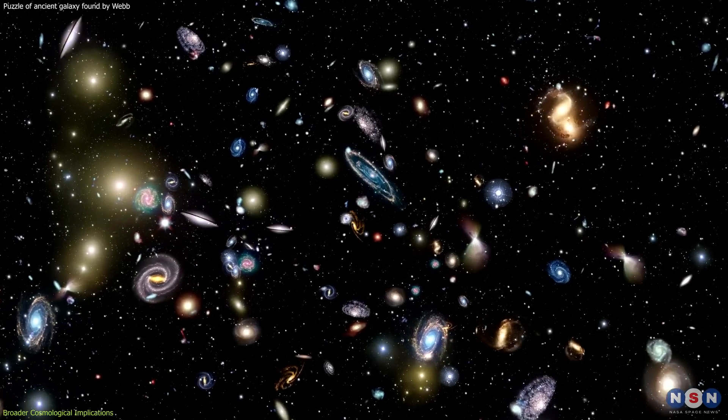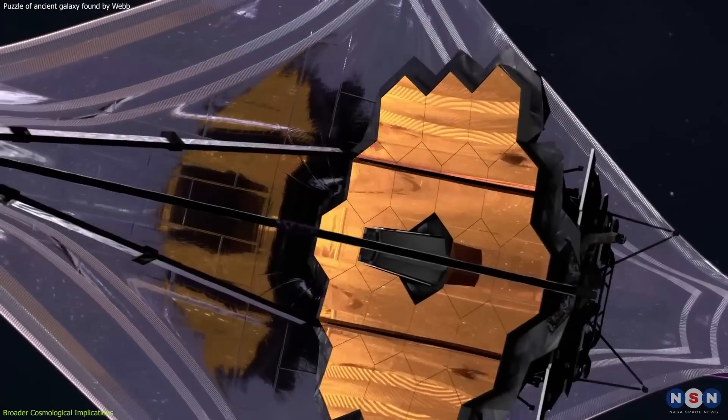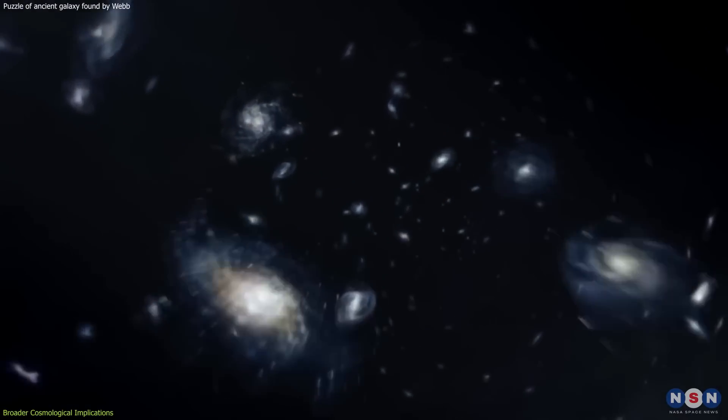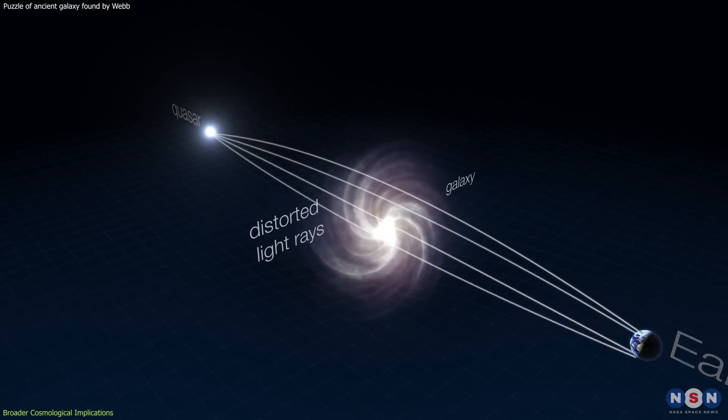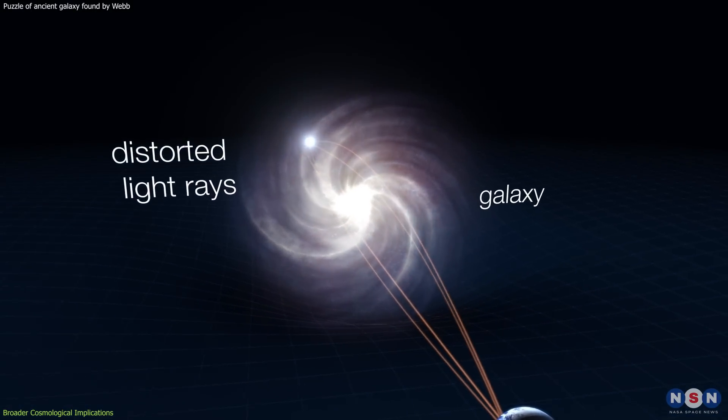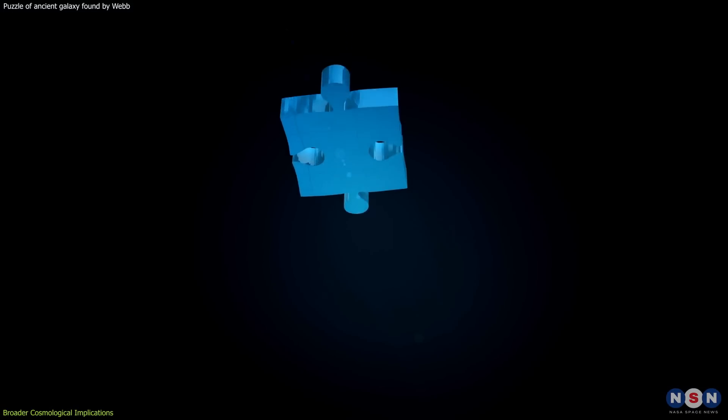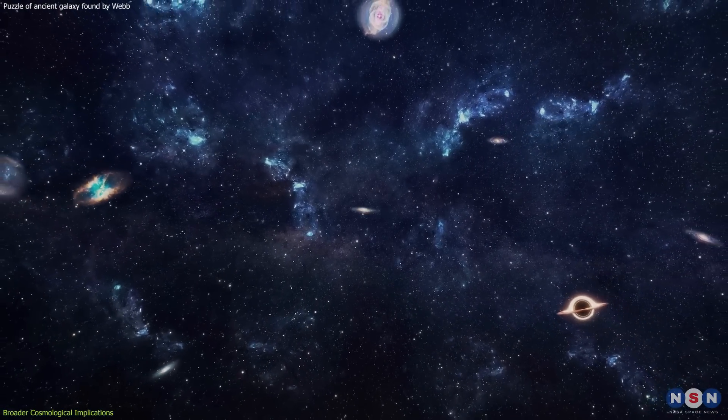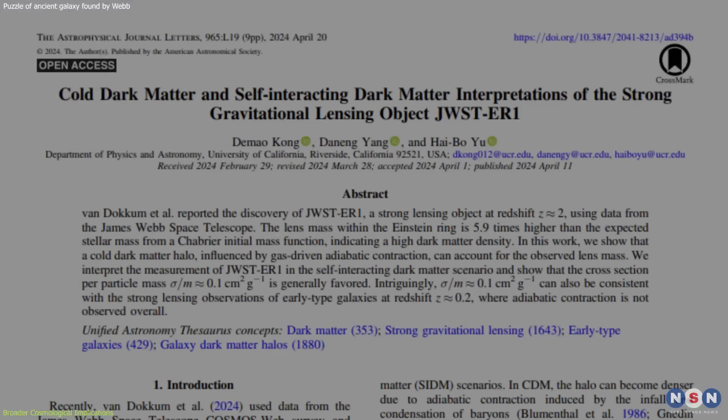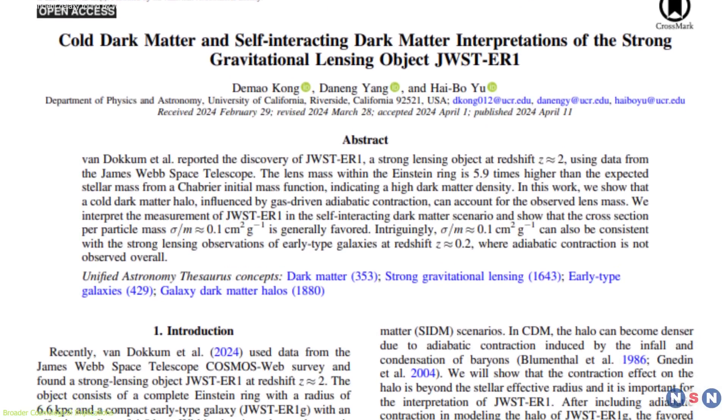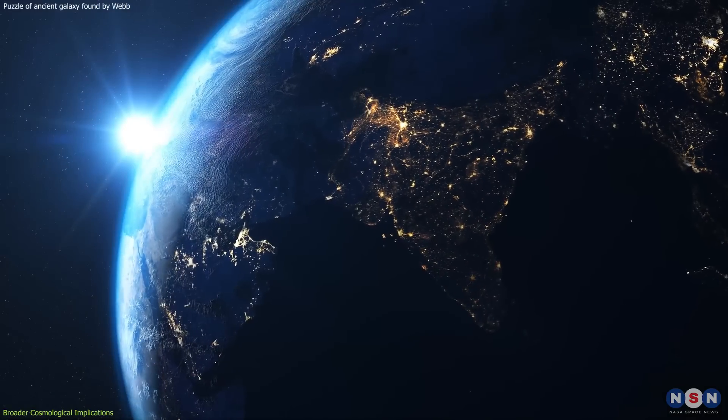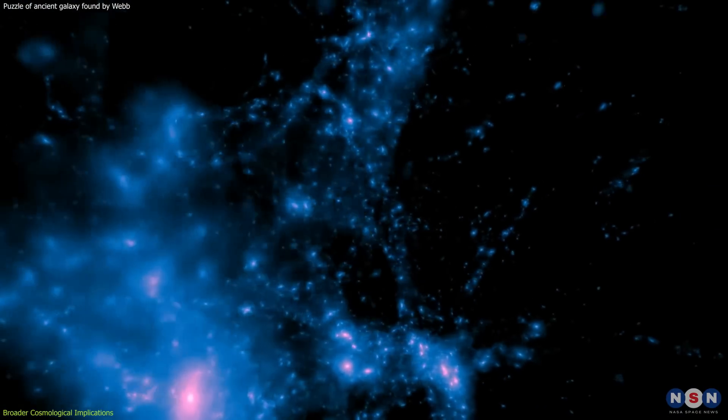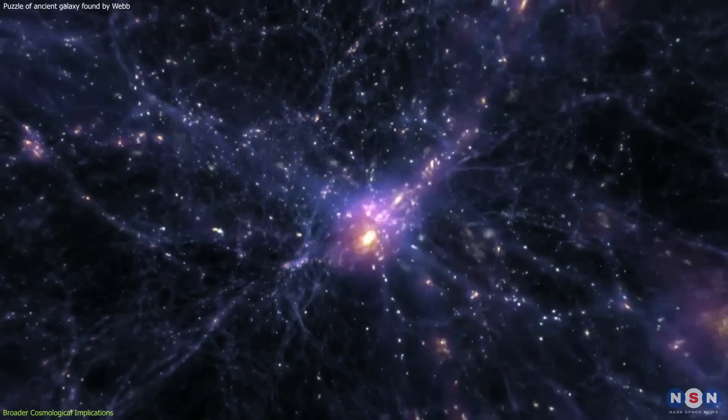Future observations planned with James Webb will likely focus on similar distant galaxies and their associated phenomena, such as gravitational lensing by other massive compact galaxies. Each of these observations adds a piece to the cosmic jigsaw puzzle, enabling astronomers to better understand the distribution of matter in the universe, both visible and dark. These studies are instrumental in testing the theories of general relativity in extreme conditions that cannot be replicated on Earth. They also provide critical data for understanding the role of dark matter in the formation and evolution of galaxies across cosmic time.